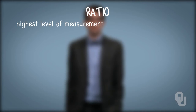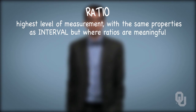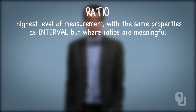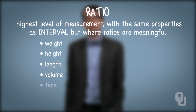The ratio scale is the highest level of measurement, with the same properties as interval, but where ratios are meaningful. Also, the zero point implies the absence of the value we're interested in. Most anything we as engineers measure will be on a ratio scale: weight, height, length, volume, time, distance, and so on.